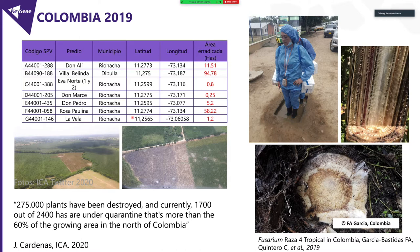Of course, it was terrible. This is in the north of Colombia where most bananas are organic. And when I went there, only two farms were reported with the disease. After one year or a few months later, seven. And many plants had been eliminated and 60% of the growing area is under quarantine.